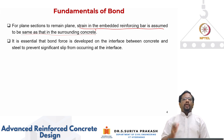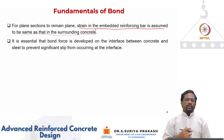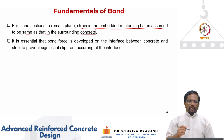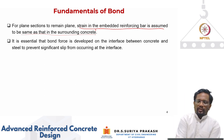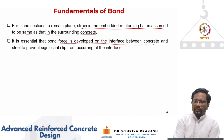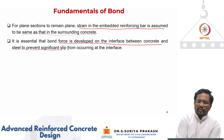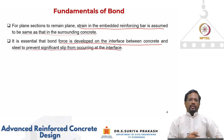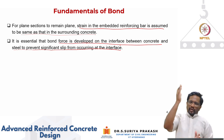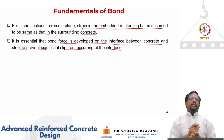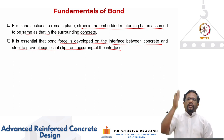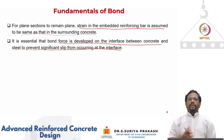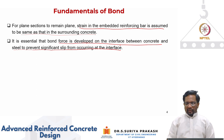This will happen only if bond exists between the concrete and the reinforcing steel. It is essential that bond force is developed at the interface between concrete and steel so that slip will not occur and everything will act in a composite manner. Then only the linear strain distribution assumption will be valid.